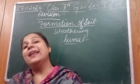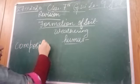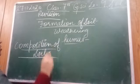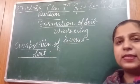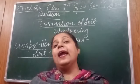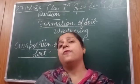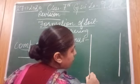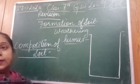The next topic is composition of soil — what things is soil composed of. For this, we did an activity in class: we took garden soil, added water to it, and kept it undisturbed for some time. We observed that different layers were formed in the soil. If we add water to soil and keep it undisturbed, certain layers form that show the composition of soil.